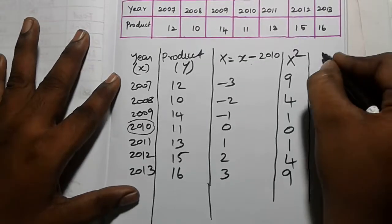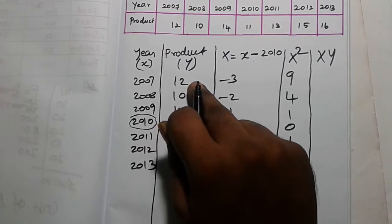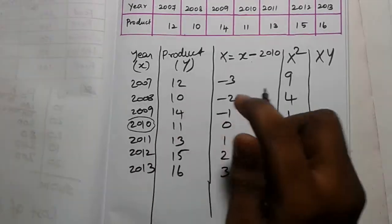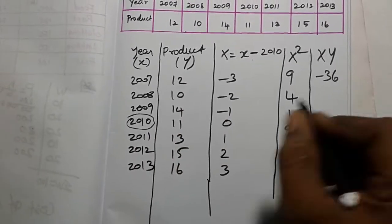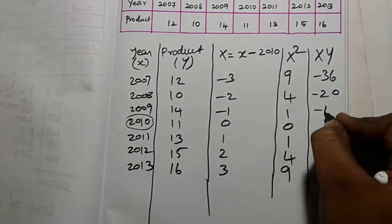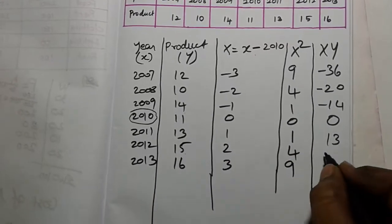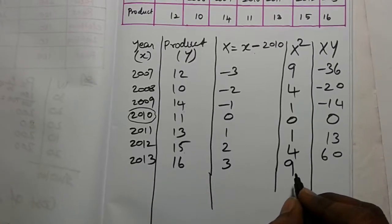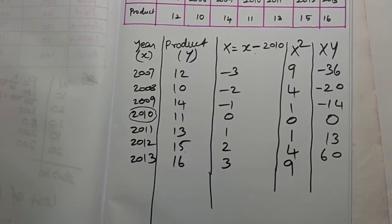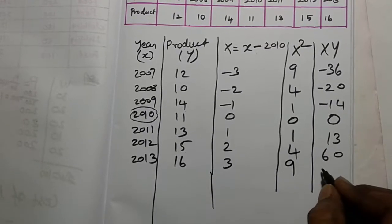Now, capital XY. Calculate: 12 into minus 3 equals minus 36; 10 into minus 2 equals minus 20; 14 into minus 1 equals minus 14; 0 into anything equals 0; 13 into 1 equals 13; 15 into 2 equals 30; 16 into 3 equals 48.